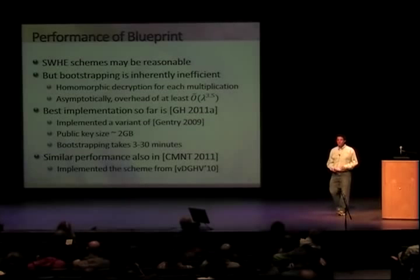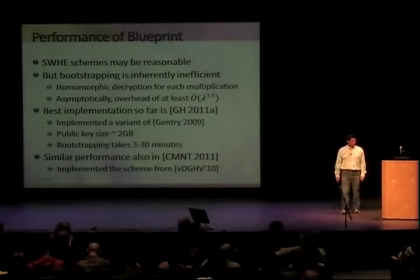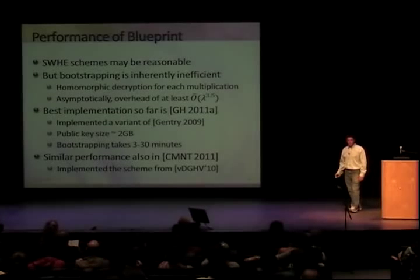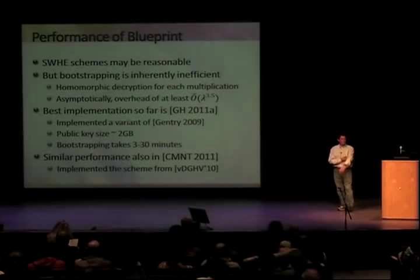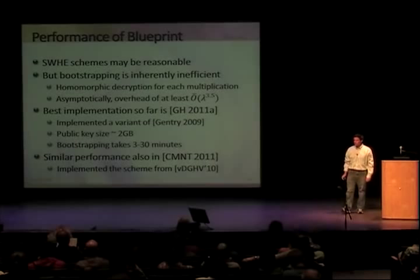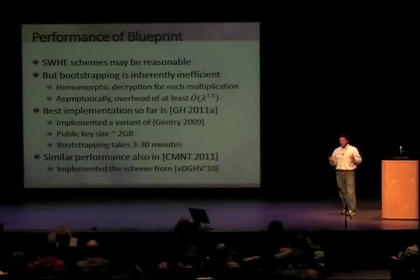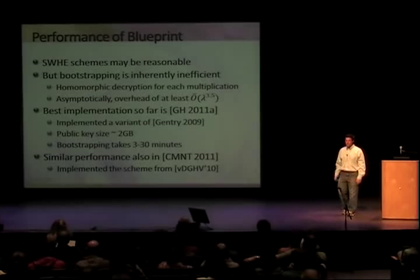The best implementation as far as I know is by Craig and me, reported at Eurocrypt this year, implementing a variant of the original Gentry cryptosystem. The public key size is roughly 2 gigabytes — it does fit on a DVD. Bootstrapping takes somewhere between 3 and 30 minutes on a fairly strong machine. It is implementable, which was a surprise, but it's not something you can actually use — it's very hard to think of an application that can wait half an hour to evaluate a single gate. There are similar performance results in a paper by Coron et al. implementing the Van Dijk et al. scheme, though their parameter choice may have been too aggressive.